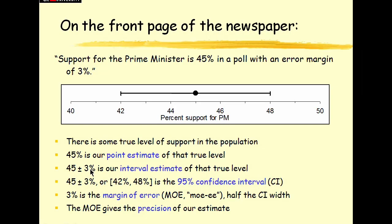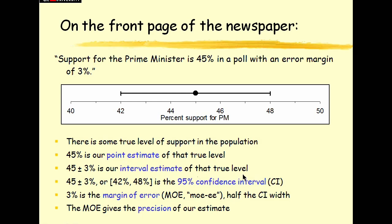Suppose we did it again with a different sample of 1,000 people. Would we get the same result? Think of dance of the means. Not quite. Well, how different would it be? Well, that's what the margin of error tells us. And so 45 plus or minus MOE, the margin of error, is our interval estimate of the true level. So this picture here, which is in fact a 95% confidence interval, is our interval estimate of support for the Prime Minister.